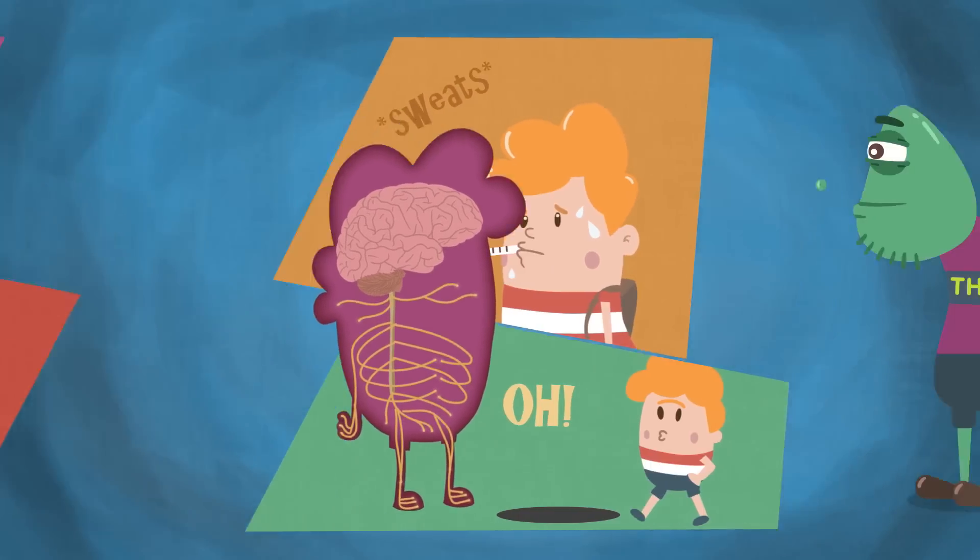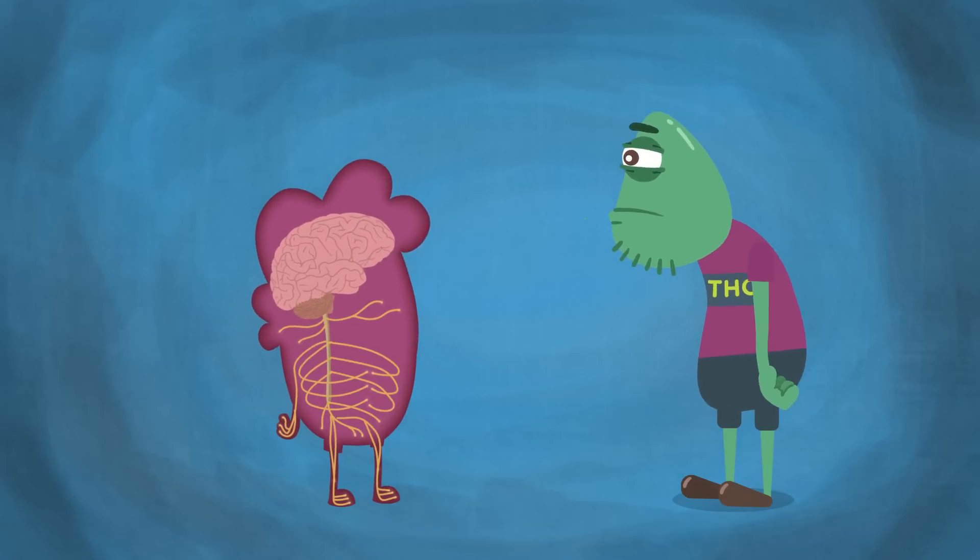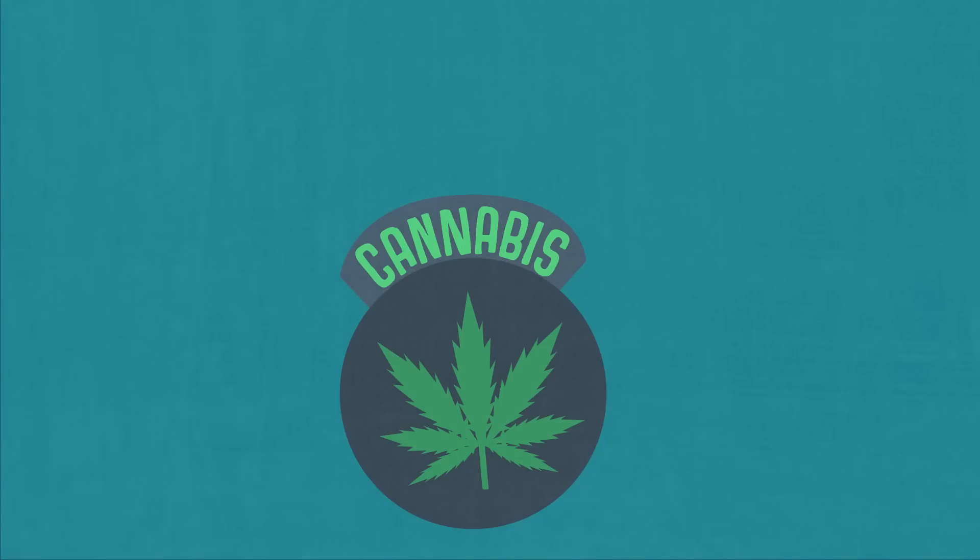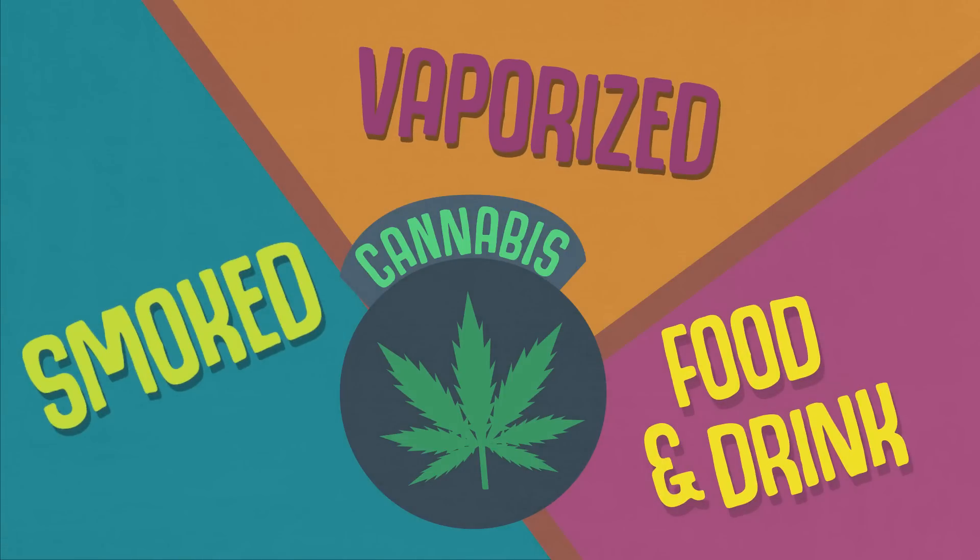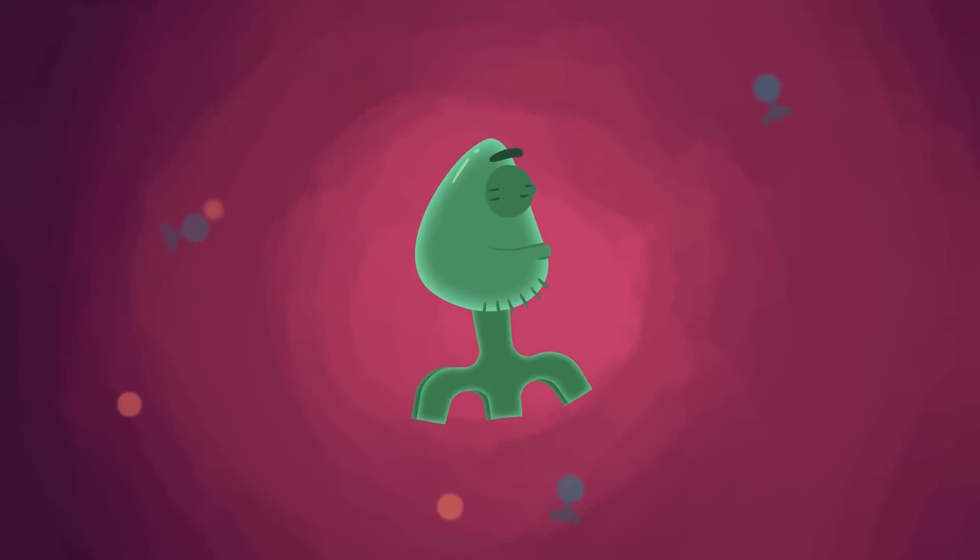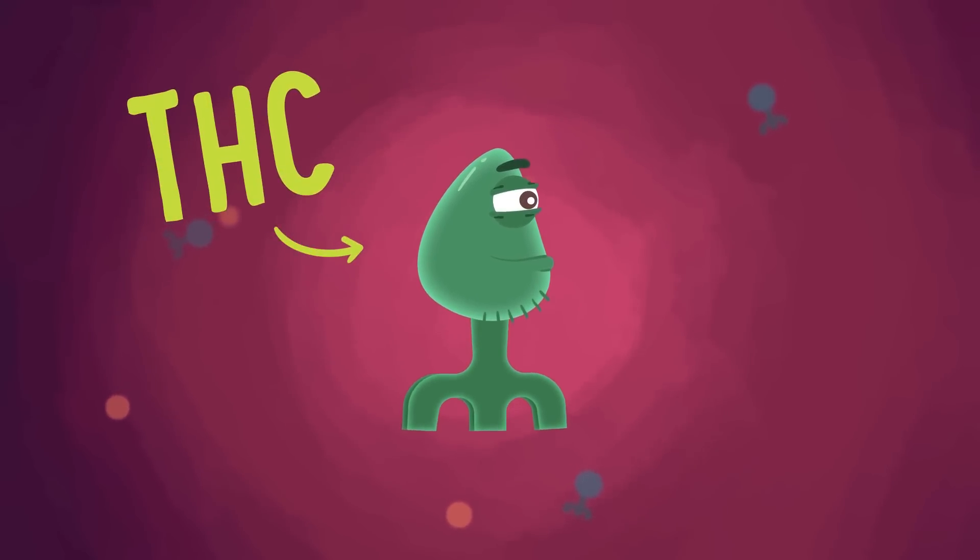Now let's see what happens when marijuana is introduced into this balancing system. Made from a plant called cannabis, marijuana can be smoked, vaporized, or ingested through food or drink. Marijuana contains a chemical called tetrahydrocannabinol, also known as THC.